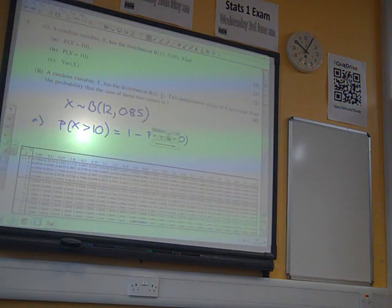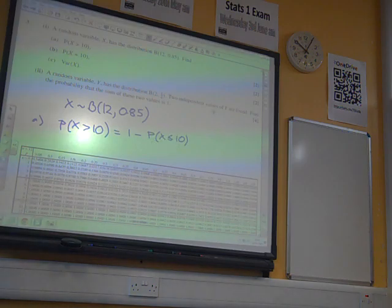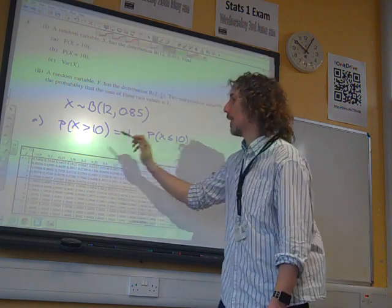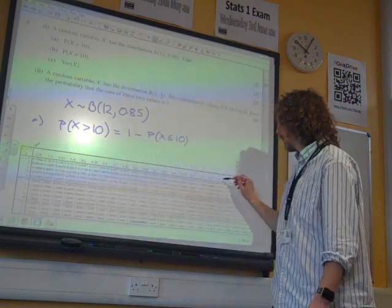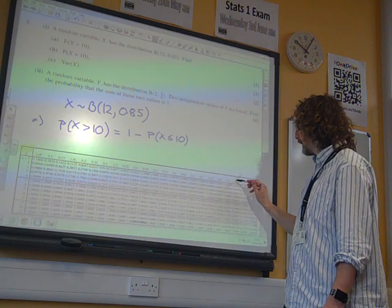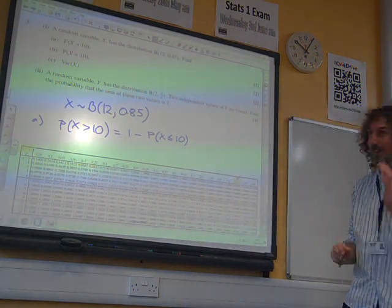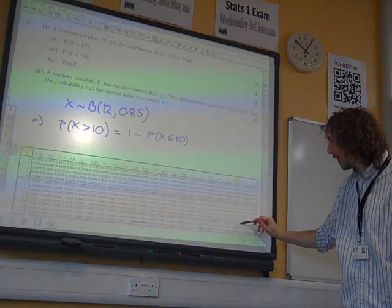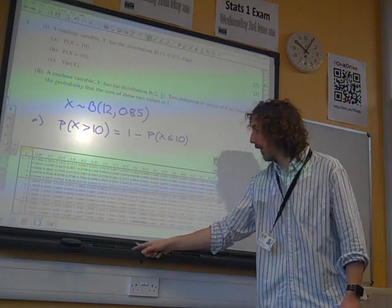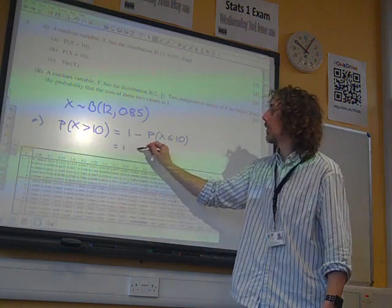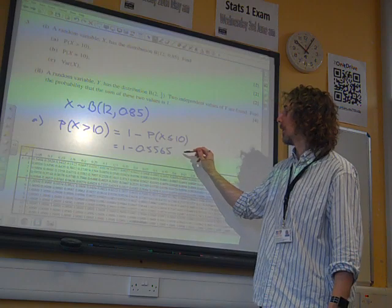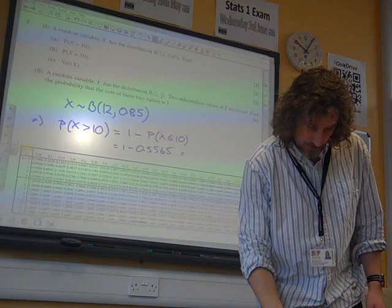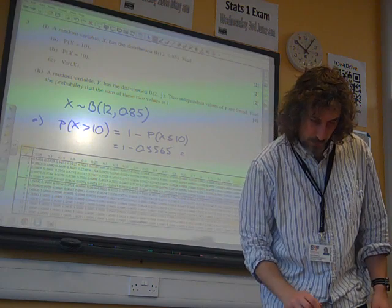Right, so we're looking for 0.85. Remember, we need to find the right table first. So it's the N equals 12 table. We're looking for the 0.85 value, which is right the way along there. We're looking for X less than or equal to 10. 10 is this line here, so less than or equal to 10 is that figure, which is 0.5565. So on the calculator we do 1 minus 0.5565, and it gives us 0.4435.